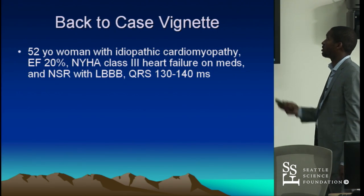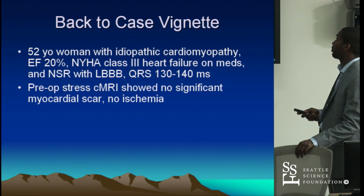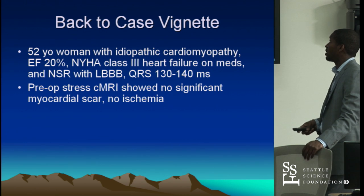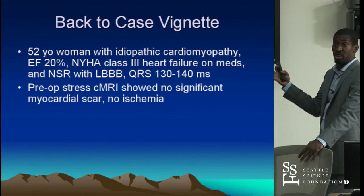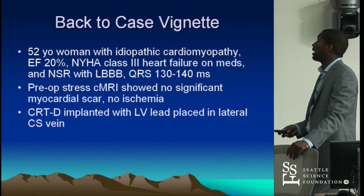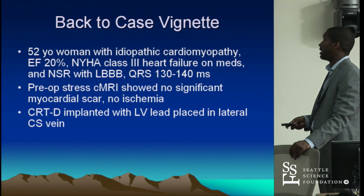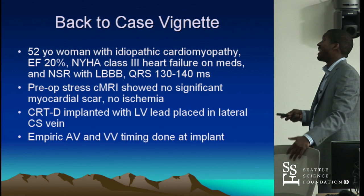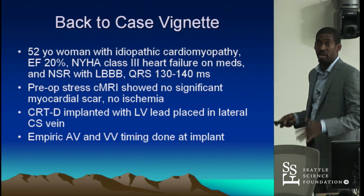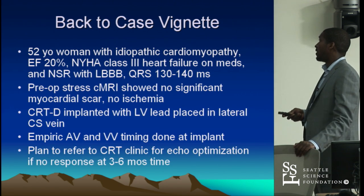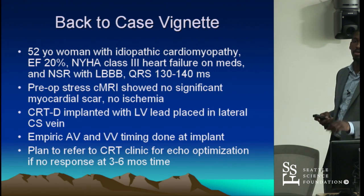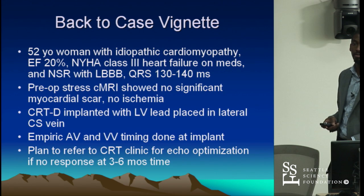Back to the case vignette: our woman with left bundle branch block and class 3 heart failure underwent cardiac MRI — she was non-ischemic with no significant scar burden. The CRT lead was placed empirically in a lateral vein with empiric AV and VV timing without echo optimization. The plan was to refer her for echo optimization if there was no response at 3 to 6 months.